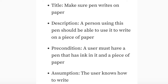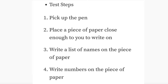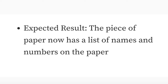Here's the breakdown. Title: make sure your pen writes on paper. Description: a person using this pen should be able to use it to write on a piece of paper. Precondition: a user must have a pen that has ink in it and a piece of paper. Assumption: the user knows how to write. Test steps: pick up the pen, place a piece of paper close to you to write on, write a list of names on the paper, write numbers on the paper. Expected result: the piece of paper now has a list of names and numbers on it.